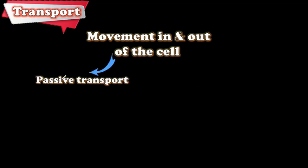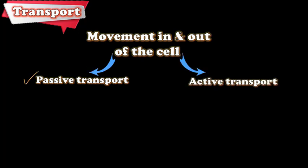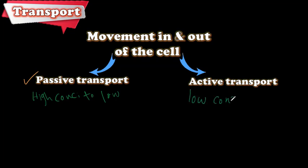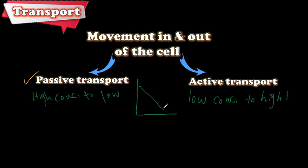For movement in and out of the cell, we have two mechanisms: passive transport and active transport. Passive transport happens from high concentration to low concentration, and active transport is the opposite — it happens from low concentration to high concentration. This is called the concentration gradient.